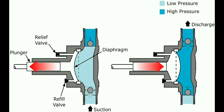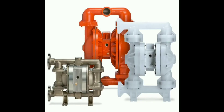Let us look at the disadvantages of a diaphragm pump. A diaphragm pump may have a limitation in terms of high flow rate compared to some other types of pumps. The flexible diaphragm may wear over time, requiring periodic replacement, as prolonged use gives it a high chance of getting damaged. The reciprocating action can result in a pulsating flow, which may not be suitable for all applications.